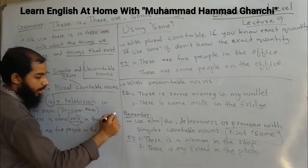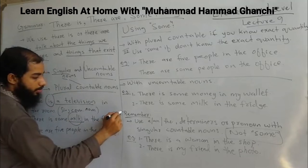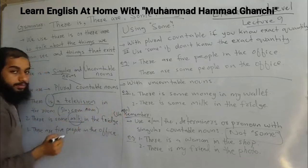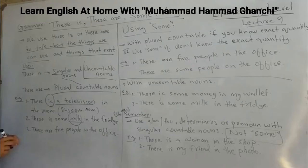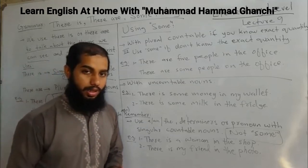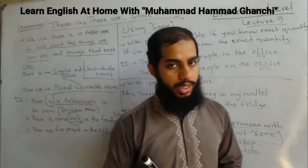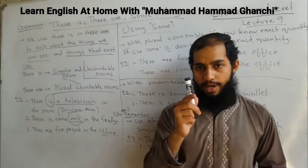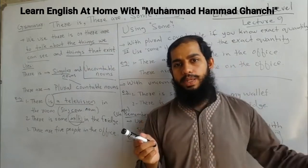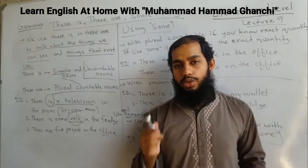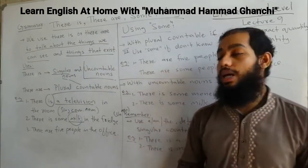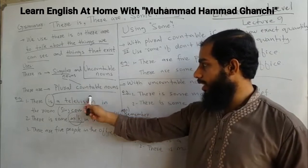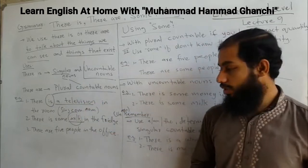For example: 'There are five people in the office' — because 'people' is countable. You can count one person, three people — it is a plural countable noun, so we use 'there are.'